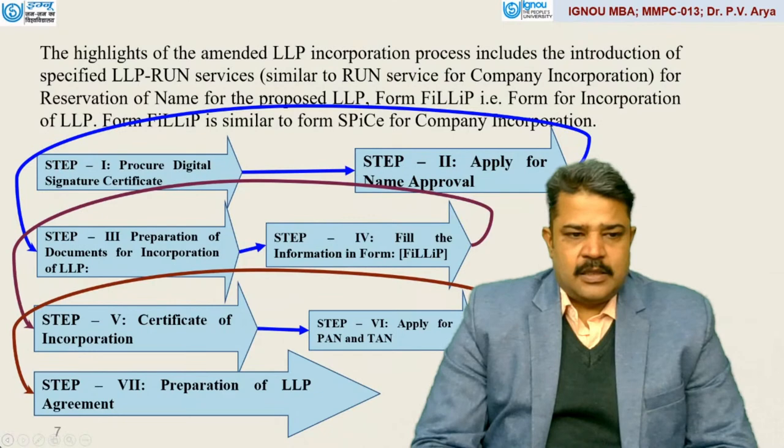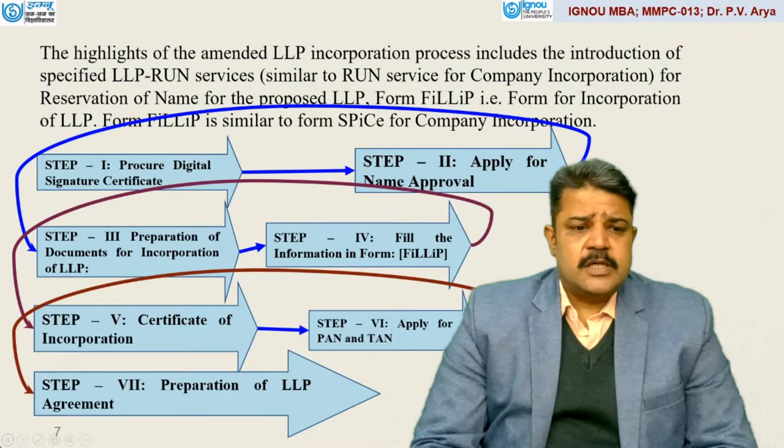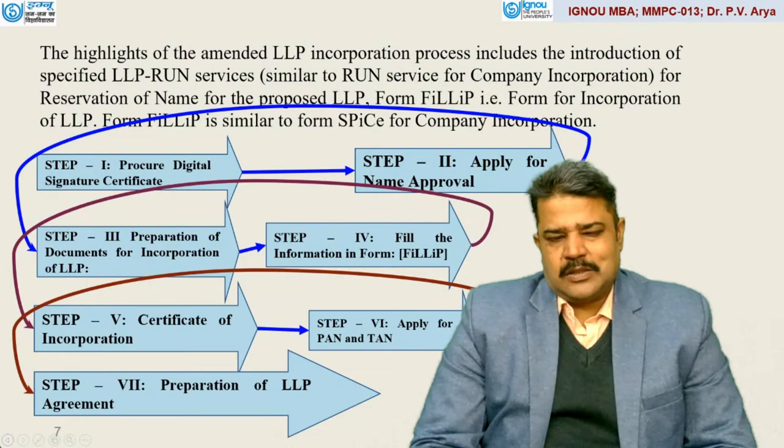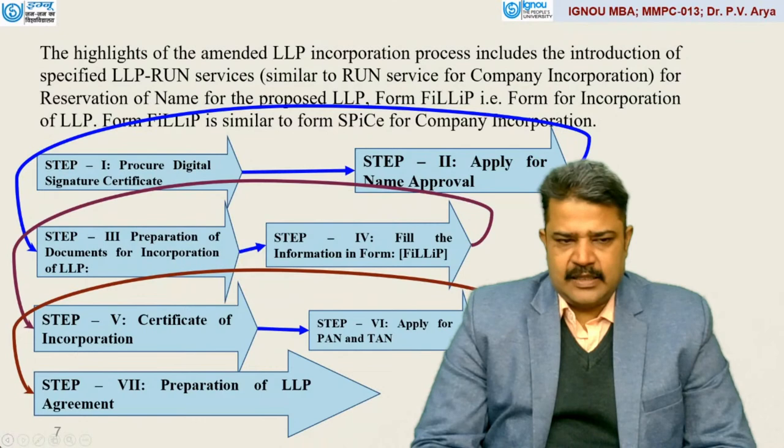Step three: once steps one and two are over, step three involves preparation of documents for incorporation of LLP. Those documents involve various conditions — what the future will be, what kind of business they are exploring. Then the next step is a formal process of filling up information in the FILLIP form.